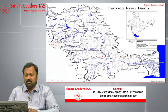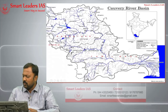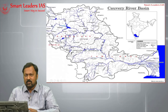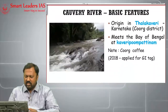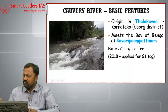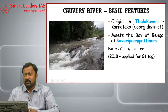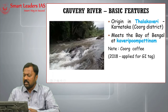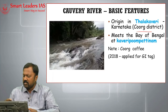This is the Cauvery River Basin. These are the basic features about the Cauvery River. The origin of the river is in a place called Talakaveri, which is in Karnataka, in Coorg District. This river meets the sea in the Bay of Bengal at a place called Cauvery Poompattinam.